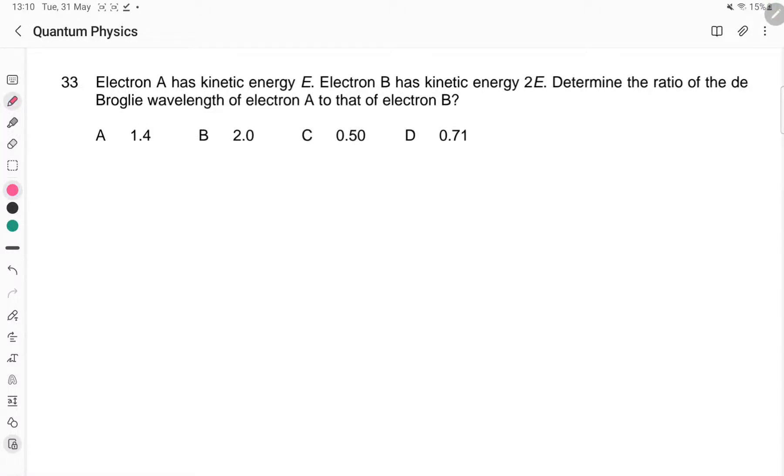Electron A has energy E. Electron B has 2E. What's the ratio of de Broglie wavelength? This is a pretty straightforward question.